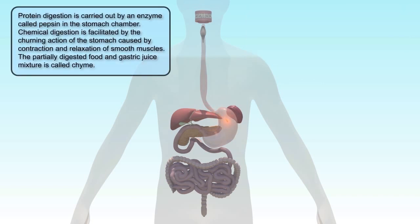Protein digestion is carried out by an enzyme called pepsin in the stomach chamber. Chemical digestion is facilitated by the contraction and retraction of the smooth muscles. The partially digested food and gastric juice mixture is called chyme.